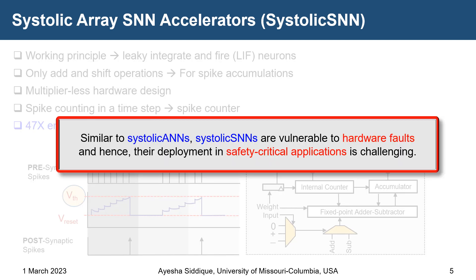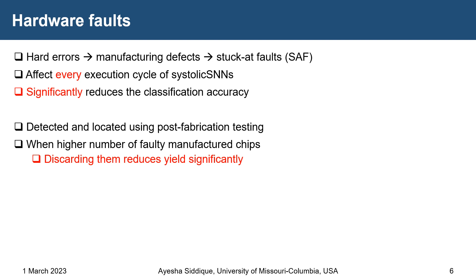Similar to systolic ANNs, systolic SNNs are vulnerable to hardware faults, and hence their deployment in safety-critical applications is very challenging. Hardware faults are most commonly manufacturing defects such as stuck-at faults, where a bit is stuck at some value and for every execution cycle, whenever a layer or new matrix is mapped, it is affected by the fault, significantly reducing classification accuracy. Such faults are detected using post-fabrication testing. Discarding faulty chips reduces yield significantly.